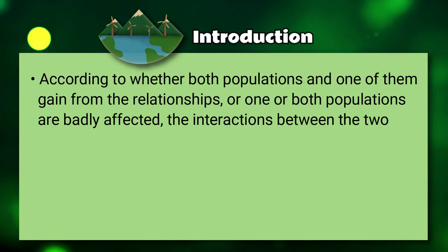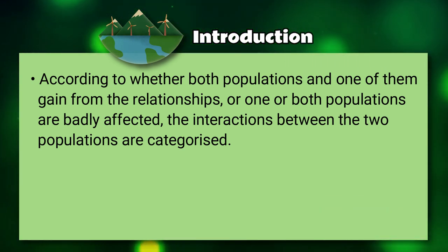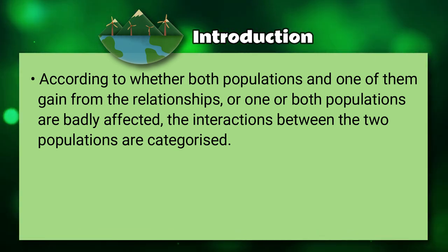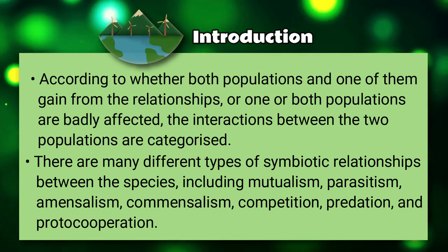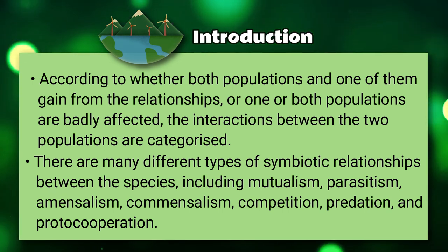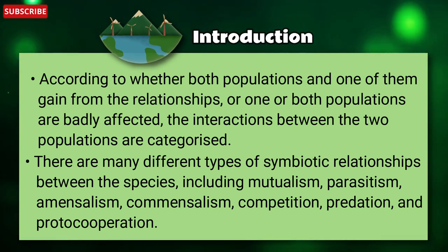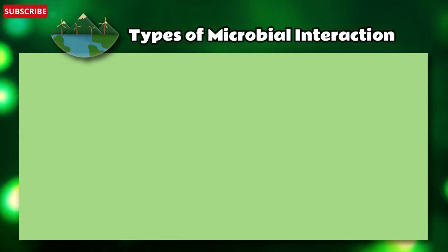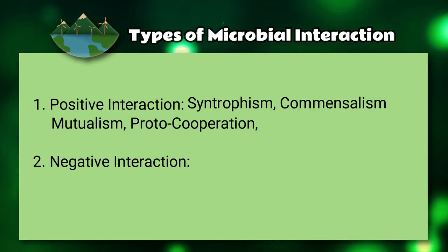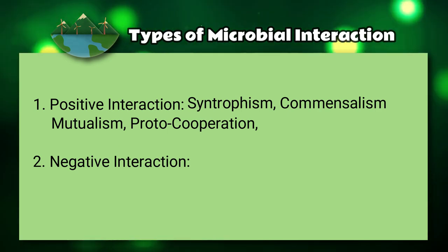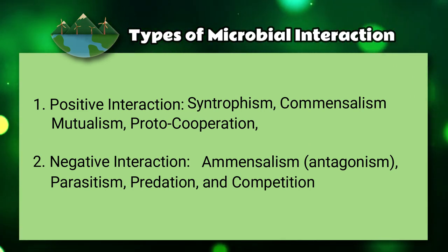According to whether both populations or one of them gains from their relationships, or one or both populations are badly affected, the interaction between two populations is characterized. There are many different types of symbiotic relationships, including mutualism, parasitism, amensalism, commensalism, competition, predation, and proto-cooperation. We have two types of interactions: positive and negative. Positive interactions include syntrophism, commensalism, mutualism, and proto-cooperation, whereas negative includes amensalism, parasitism, predation, and competition.